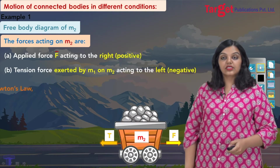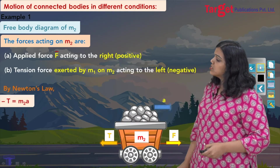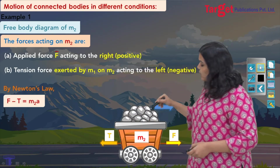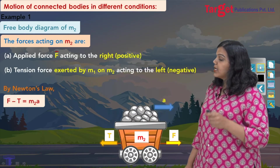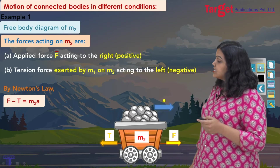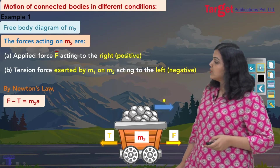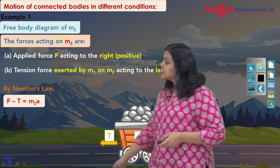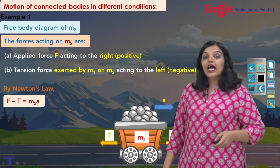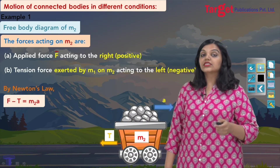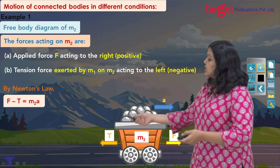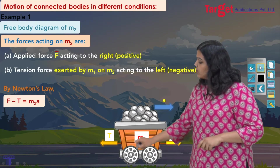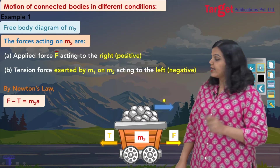I can now use Newton's law. Writing down the equation of motion: F minus T equals m2a. Pay attention to our sign convention: F is positive because it acts to the right; T comes with a negative sign because it acts to the left; and m2a is positive because the direction of motion is to the right. This is the equation of motion for m2 obtained from the free body diagram.